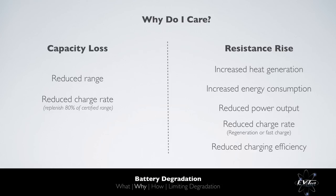A rise in resistance results in a decrease of efficiency, thereby increasing heat generation for a given power output and increasing overall energy consumption. If the vehicle power output is limited by the power capability of the battery, a rise in resistance will also reduce peak power. This will initially be observed as an increase of state of charge below which the power is derated, or a reduction of time that peak power can be maintained. The maximum charge rate will be reduced, as will charging efficiency, thus the energy cost per unit distance travelled will increase over time.